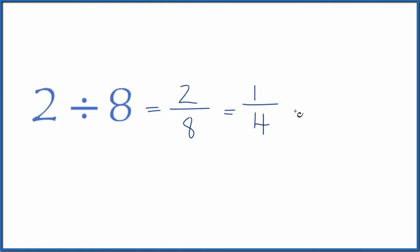You can check that on your calculator. 1 4th or 2 8ths, that equals 0.25.